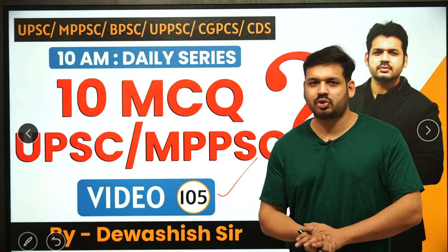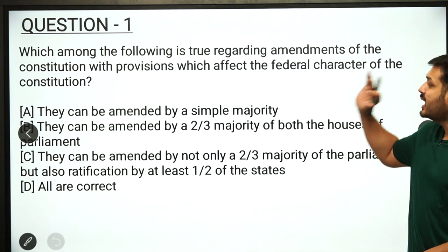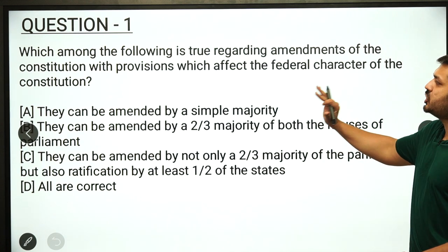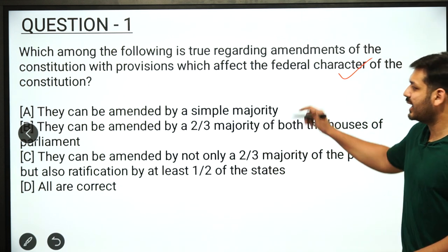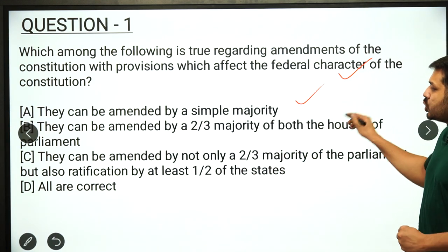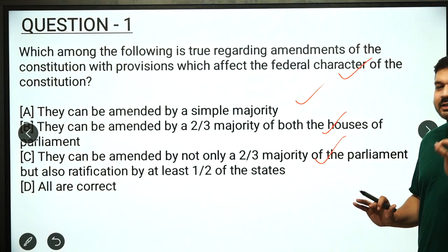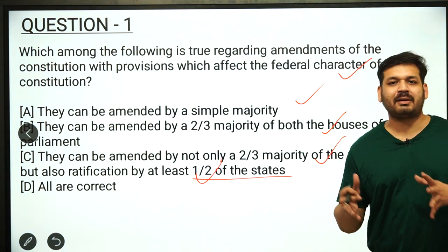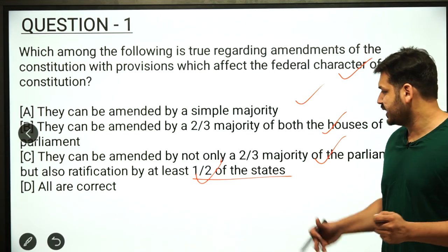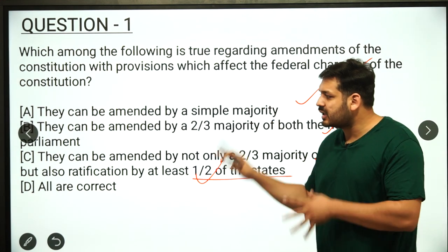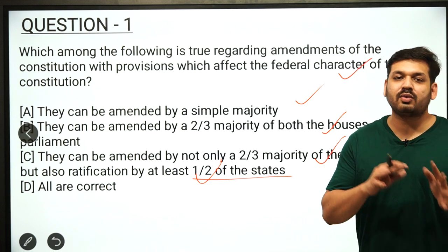The cut-off is going to be 9 marks. The first question is related to Indian Polity: which among the following is true regarding the amendment of the Constitution with provisions that affect the federal character of the Constitution? At least half of the states — 14 states — must ratify it through the state legislature by simple majority. Option D is 'all are correct.' You must know which statement is correct regarding constitutional amendment. We do it in two ways: through simple majority, and under Article 368. Under Article 368, there are also two types, and the second type affects the federal character of the Constitution.